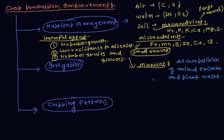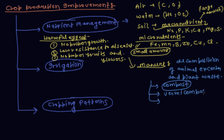Based on the biological material used, manure is of three types: first is compost, second is vermicompost, and the third is green manure.